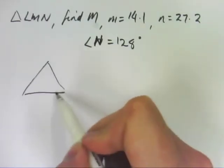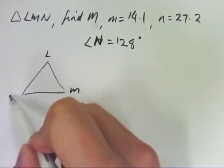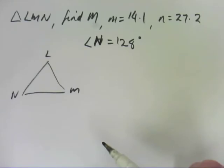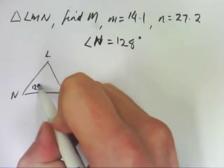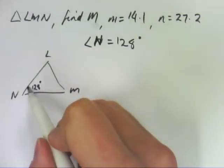So this time I'm going to draw a triangle again, L, M, N. This angle in here might not look it, but it's 128 degrees, angle N there.